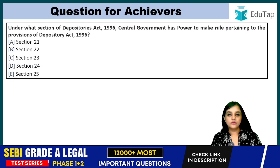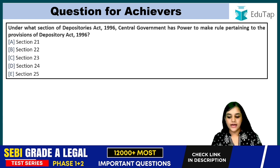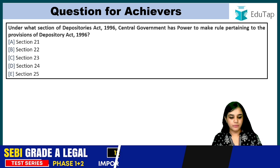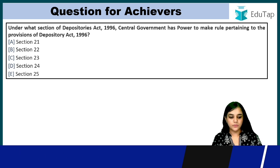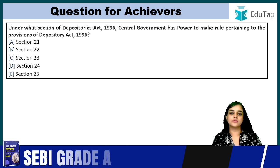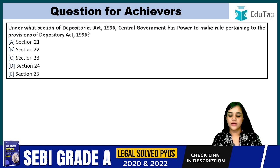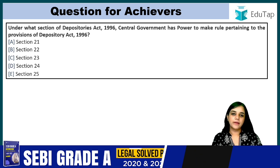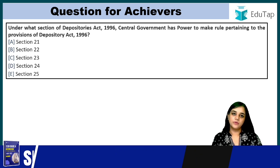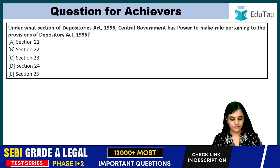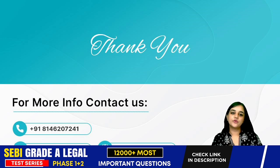This is a bonus homework question: Under what section of the Depositories Act 1996 does the central government have the power to make rules pertaining to the provisions of the Act? The options are sections 21, 22, 23, 24, or 25. Please comment your answer below. That's all for today — I hope this was a helpful session. Thank you.